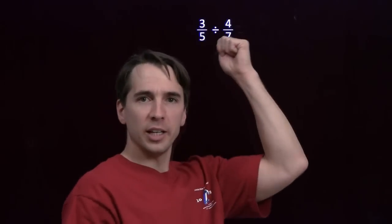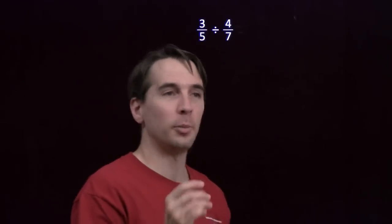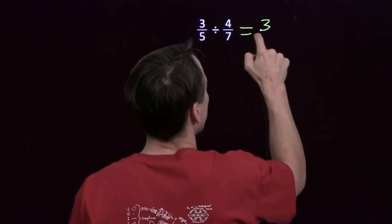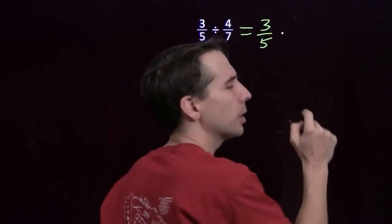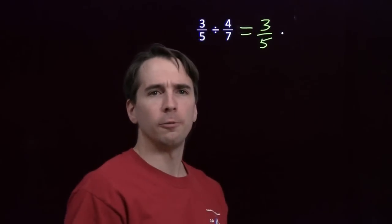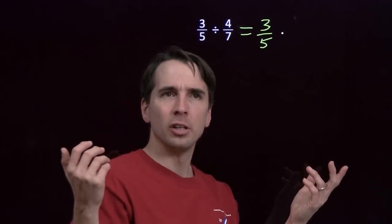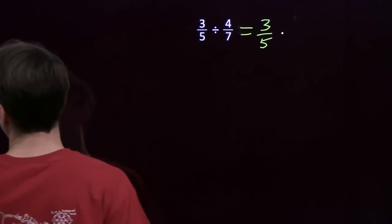But we have a rule for taking this division and turning it into a multiplication. 3/5 divided by 4/7, that's just 3/5 times the reciprocal of 4/7. What's the reciprocal of 4/7? We'll have to figure that out, and then we'll come back to this.